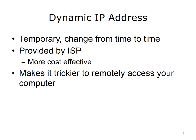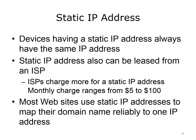There are dynamic and static IP addresses. A dynamic IP address is temporary and changes periodically. For example, when you reboot an ISP's equipment, such as a cable modem router, it will probably boot back up with a different IP address than it had previously. ISPs generally provide customers with a dynamic IP address because dynamic IP addresses are more cost effective. Having a dynamic IP address also makes it trickier to remotely access your computer. A static IP address does not change; devices assigned to a static IP address always have the same IP address. A static IP address can be leased from an ISP. It costs more than leasing a dynamic IP address, with monthly charges ranging from approximately $5 to $100.